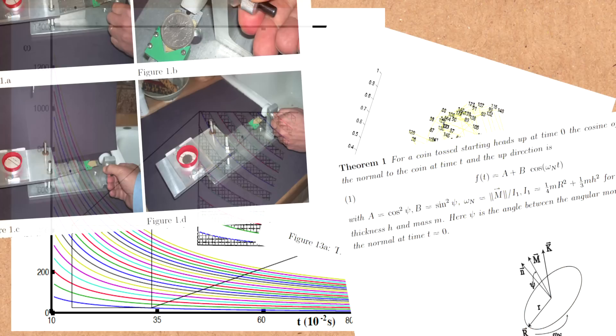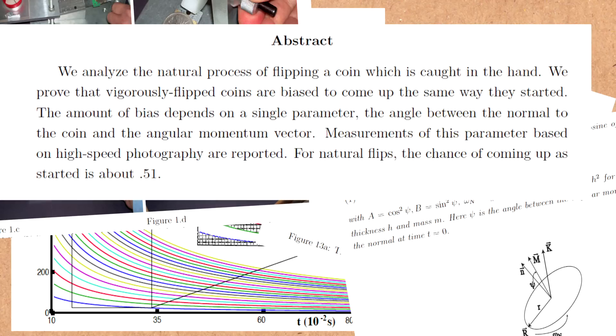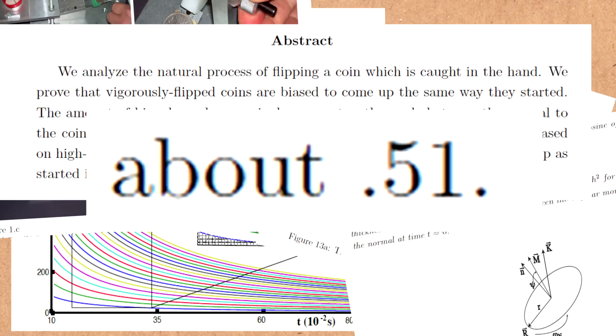In work with Susan Holmes and Richard Montgomery, we showed that coins the way real people flip them, it's about 0.51. So one in a hundred off. And it's not 0.51 to heads or tails. It's 0.51 that it comes up the way it started. That is, if you start it heads up, it spends more time heads up. And I don't care how hard you flip the coin. You can flip it to the moon. That bias is a provable stable bias.